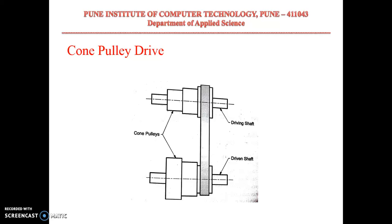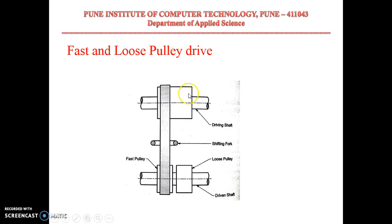Next is cone pulley drive. A cone pulley drive is used for changing the speed of the driven shaft while the driving shaft runs at a constant speed. This arrangement is provided to achieve different velocity ratios.